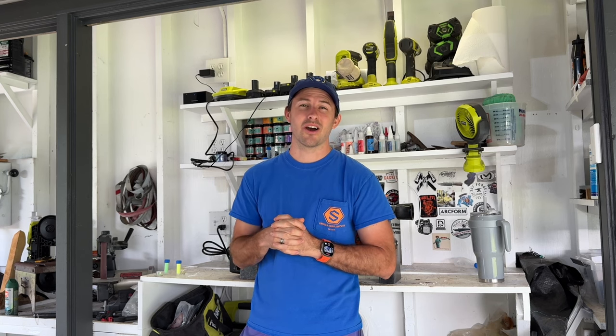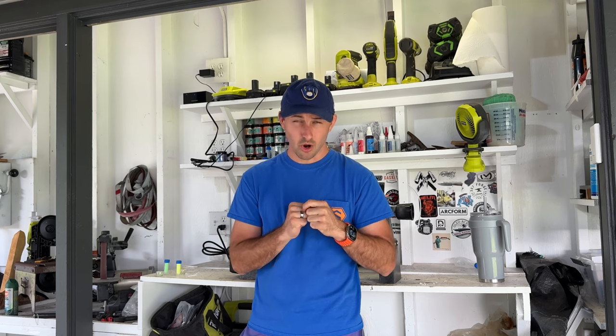This is a tungsten offset channel inlay ring. We're going to put in some neon green opal as well as some neon green glow powder and that's it. Stick around I'm going to show you how to make it.